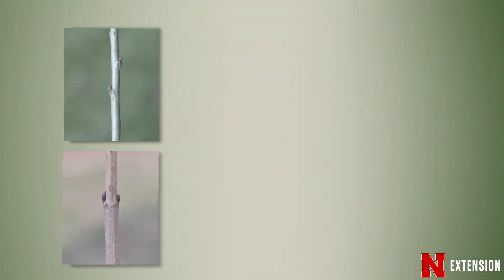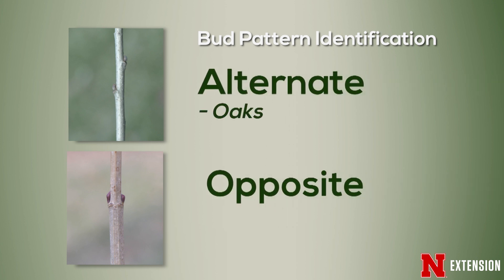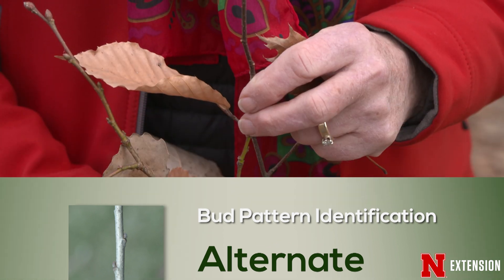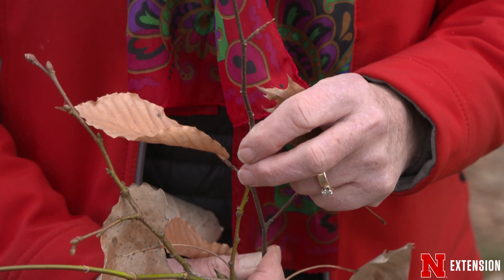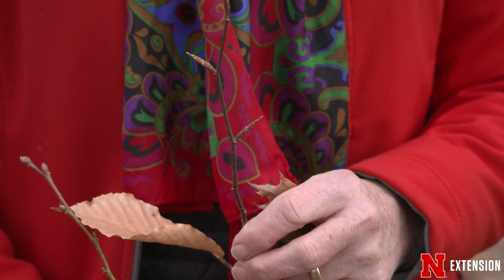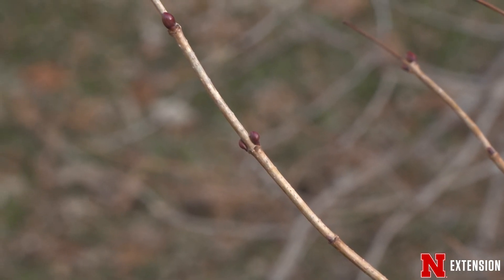We look then at the arrangement of the buds on the branches. Are they alternate or are they opposite? That is a really key identification factor with deciduous trees and shrubs. It can be a little bit tricky on some that want to be subalternate, sub-opposite, or whorled, but in general that is one of the very first things we look at, especially if you don't have any foliage.